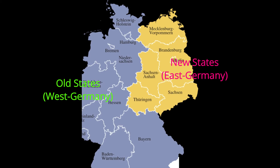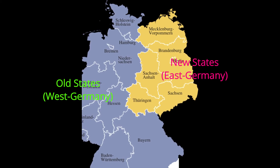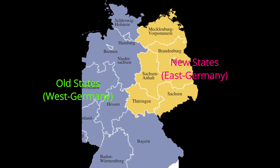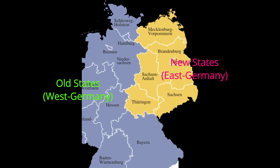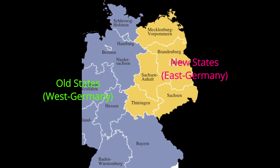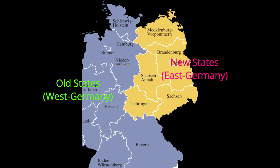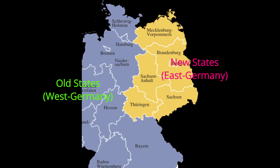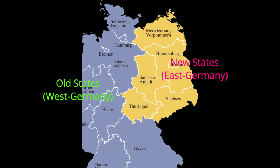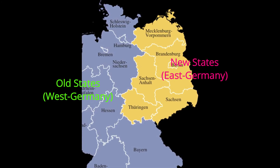The five new federal states are Thuringia, Saxony, Saxony-Anhalt, Brandenburg, and Mecklenburg-Western Pomerania.